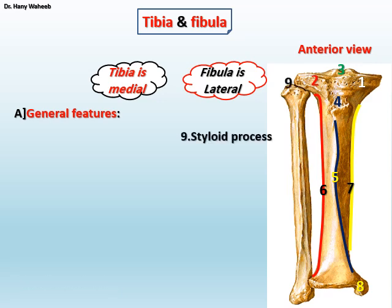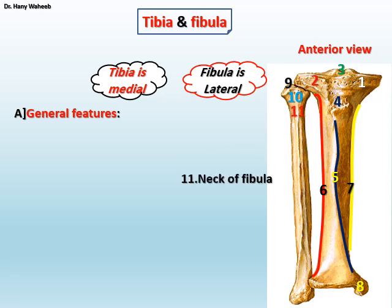Continuing the anterior view: 9. The styloid process of the fibula, which is the apex of the head of the fibula directed posterolaterally; 10. The head of the fibula; 11. The neck of the fibula; 12. The lateral malleolus at the lower end of the fibula.